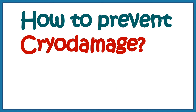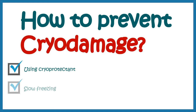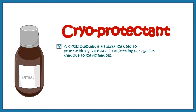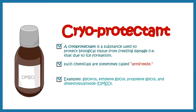So what is the solution? The solution is to use cryoprotectants along with slow freezing conditions. Cryoprotectants are substances which protect cells from these kinds of freezing damages. Such chemicals are also known as antifreeze molecules. Some examples are dimethyl sulfoxide, glycerol, or ethylene glycol.